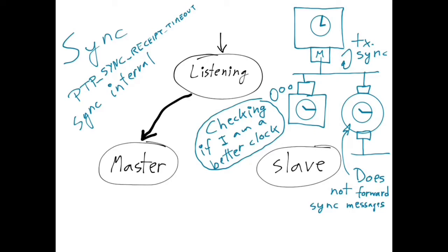If the new port does not belong to a better clock, then it transitions to the slave state. In contrast, if it belongs to a better clock, then it would have transitioned to the master state.